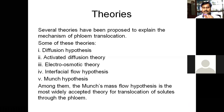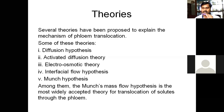The first is the diffusion hypothesis, based on the phenomenon of diffusion. Glucose or food material is produced by the leaf by the activity of photosynthesis, so a large amount of food is present in the leaves and is less present in the surrounding cells and in the phloem, so food gets diffused from one cell to another. This is the basis of diffusion hypothesis.